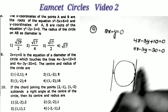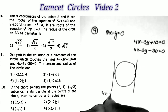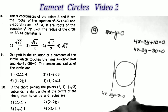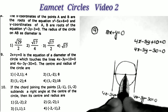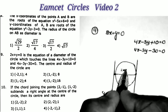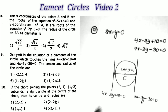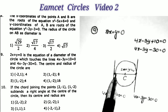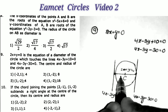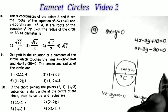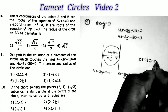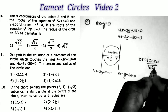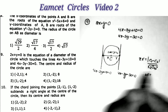Observe that the two given lines are parallel lines. The first equation is 4x − 3y + 10 = 0 and the second is 4x − 3y − 30 = 0. The line 2x + y = 0 is the diameter, meaning the center lies on this line. Since the circle touches both parallel lines, the distance between them equals 2r. The formula for distance between parallel lines is |c₁ − c₂| / √(a² + b²).